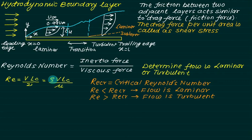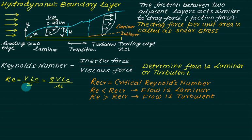The inertia force is given by Rho times V times LC and the viscous force is given by Mu. This ratio becomes Rho times V times LC divided by Mu, or sometimes V times LC divided by nu, where V is the velocity of the surrounding fluid. LC is the characteristic length, nu is kinematic viscosity in meter square per second, and Mu is dynamic viscosity in Pascal second.